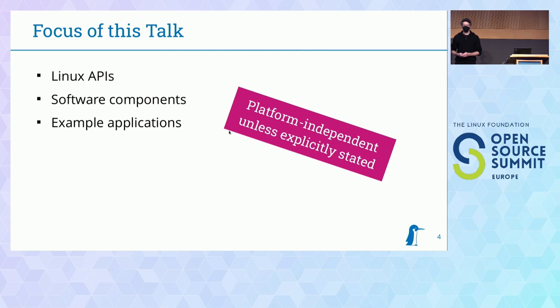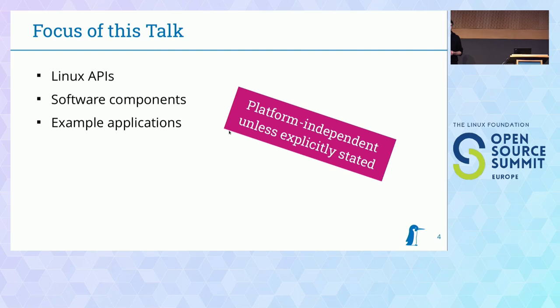The focus of this talk will be the Linux APIs. I will look into the software components that are in Linux, example applications showing how you can use DRM and graphics, and which example applications you can use to look into the graphics stack, debug it, and see if something is working or not. Most of this talk will be platform independent, though I will point out platform-dependent things like display controllers and GPUs, trying to keep it generic across ROCKchip, IMX6, Intel, or whatever you encounter.